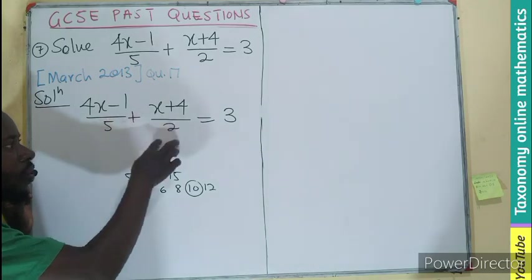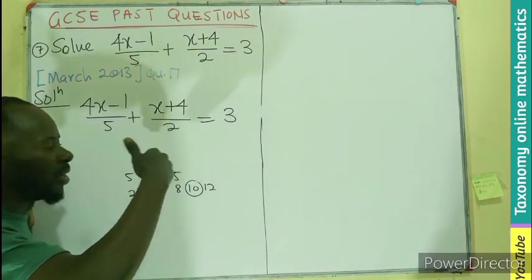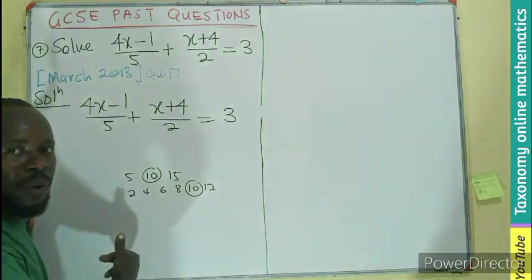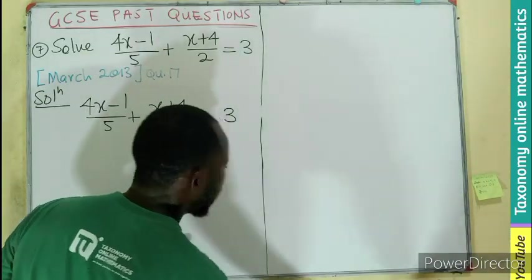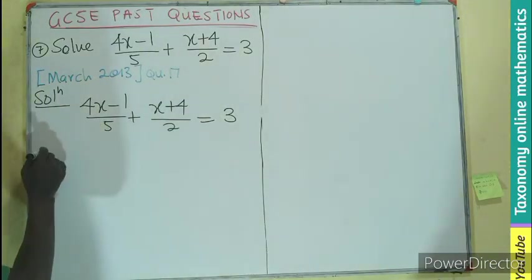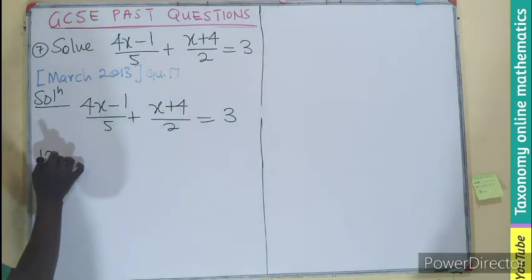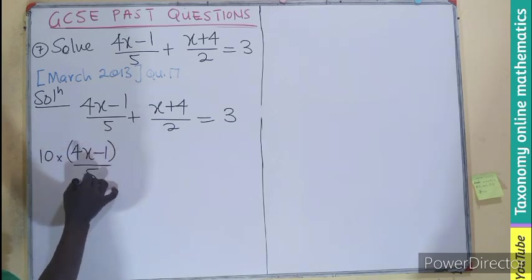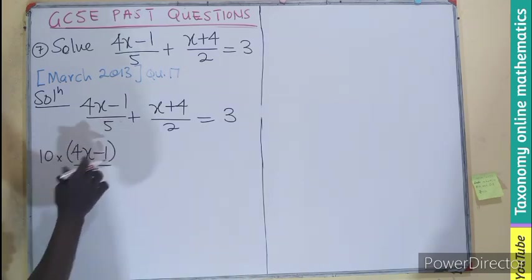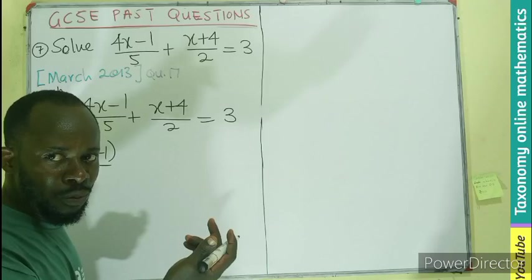I will be multiplying each term in this equation by 10. So 10 will multiply into bracket 4x minus 1 divided by 5. We are introducing a bracket because this is a binomial.